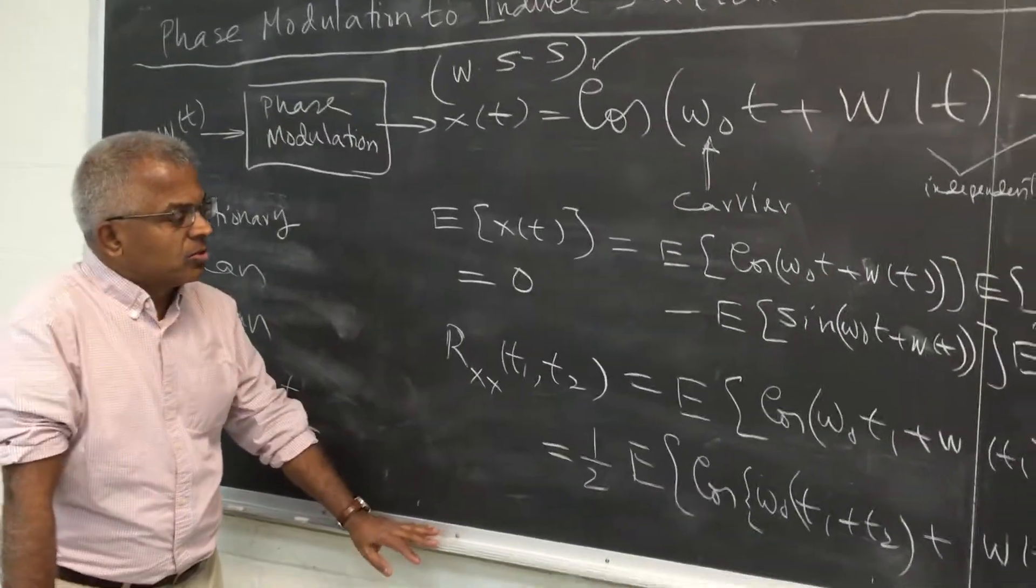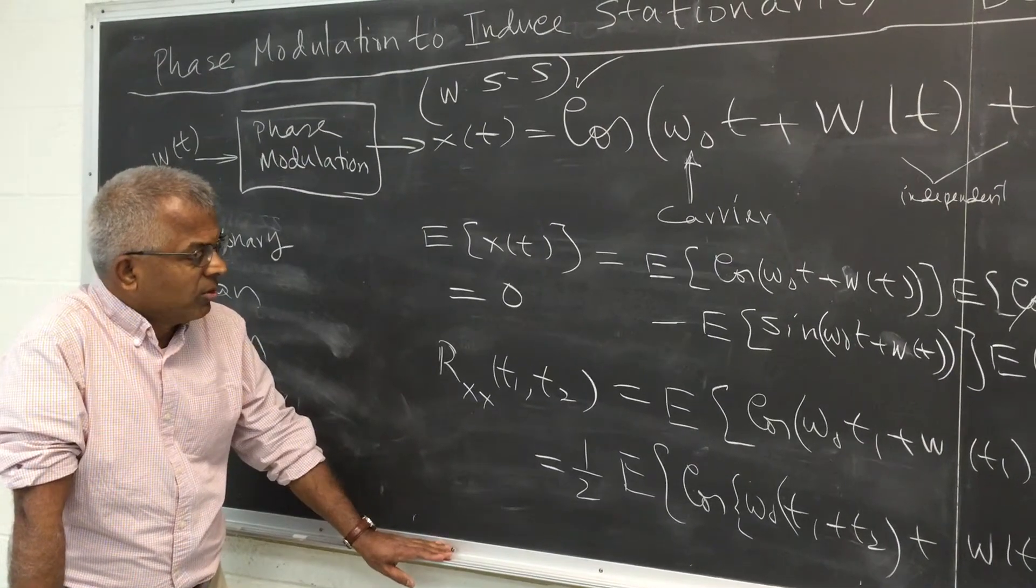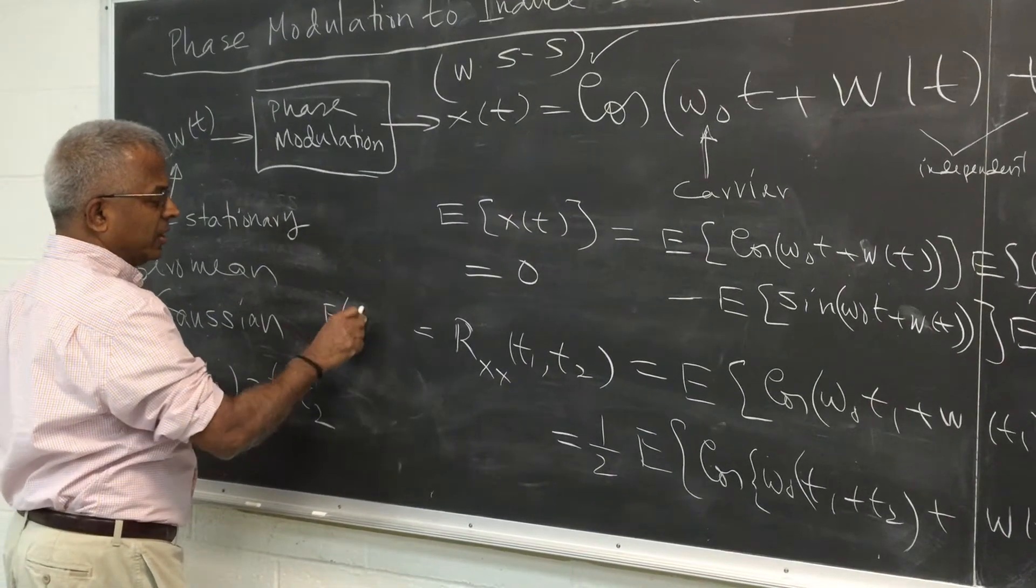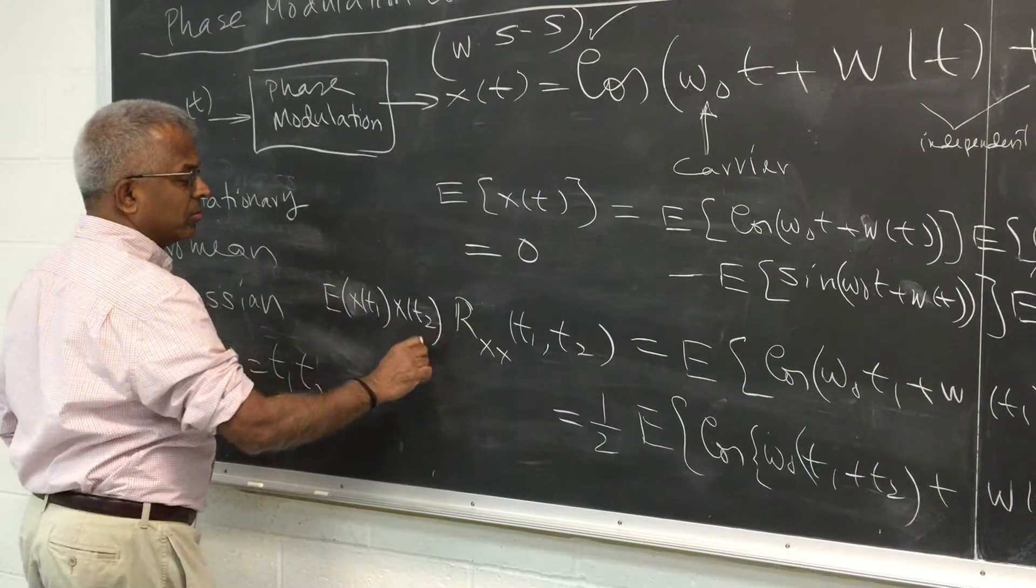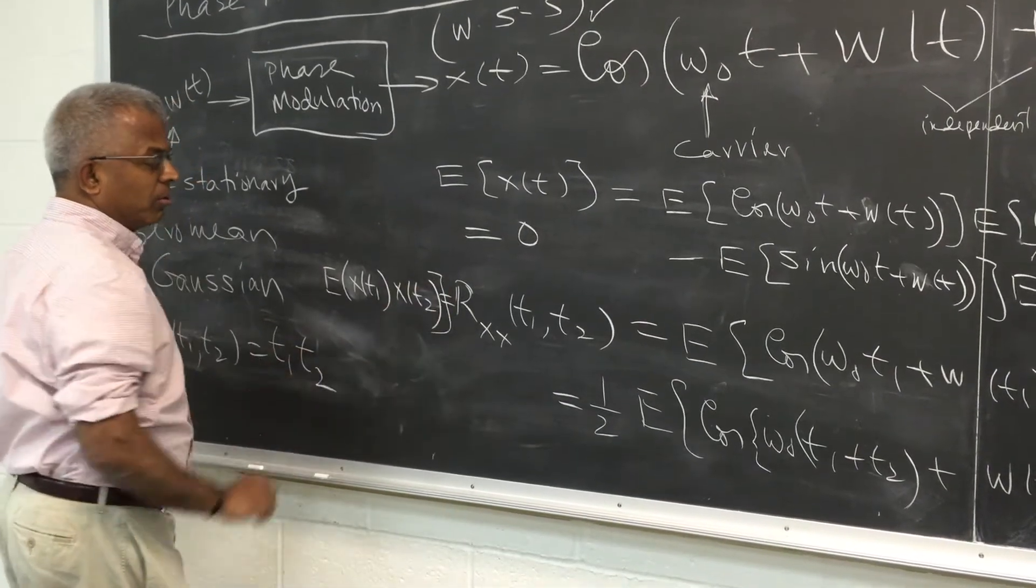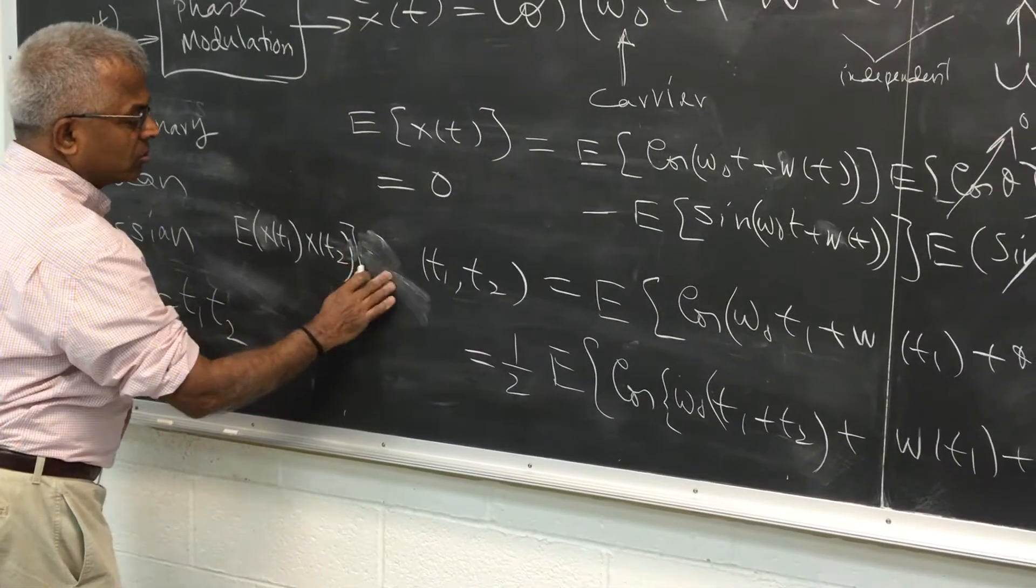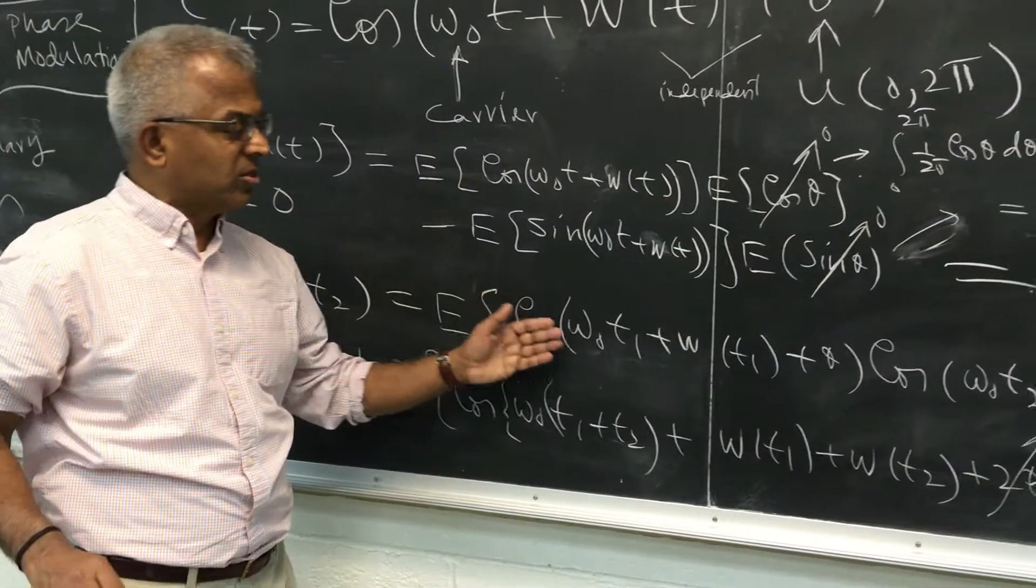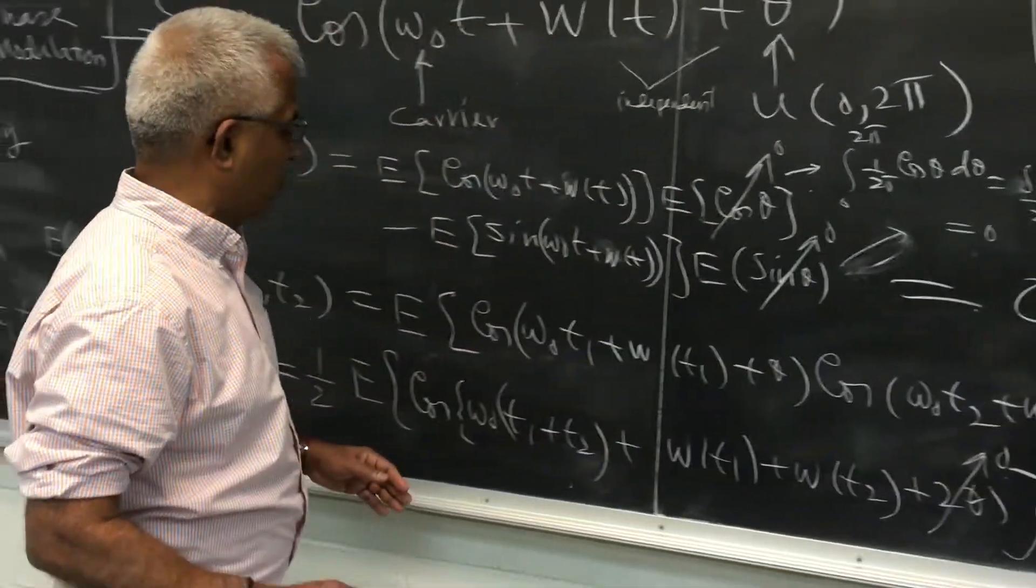If you look at its autocorrelation, of course we do not know whether it is stationary or not. So we will start with rxx which is expected value of x(t1) multiplied by x(t2). So we will try to compute this quantity. So let's substitute, this is x(t1) multiplied by x(t2).